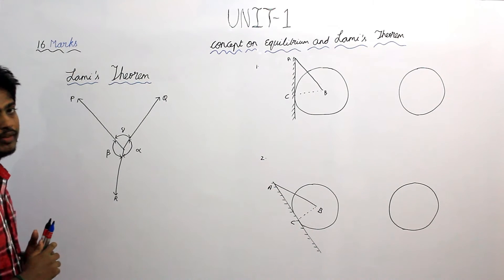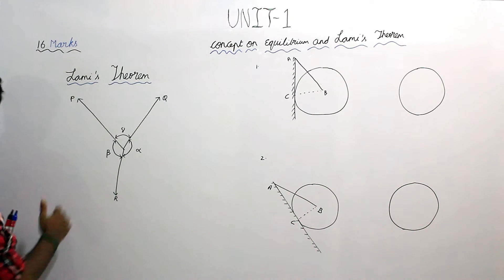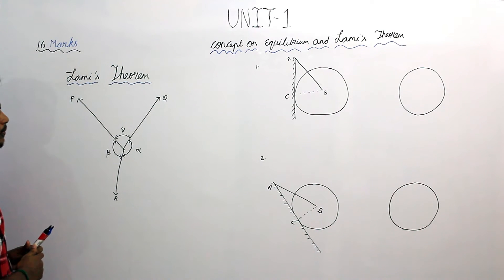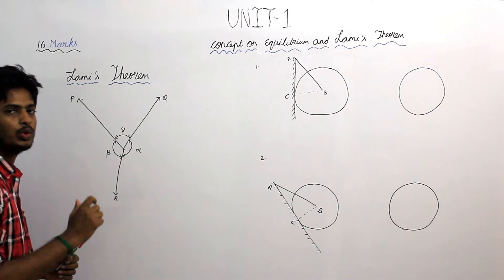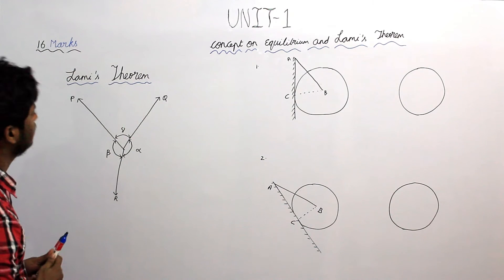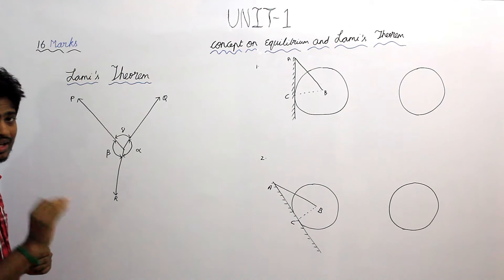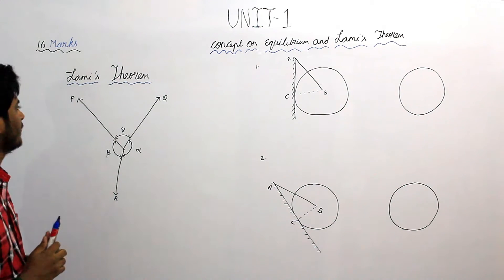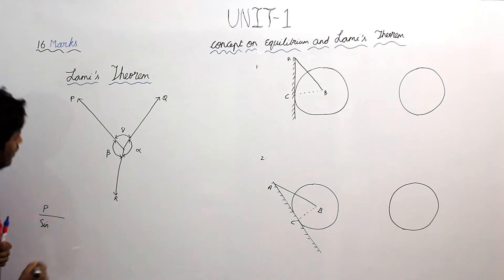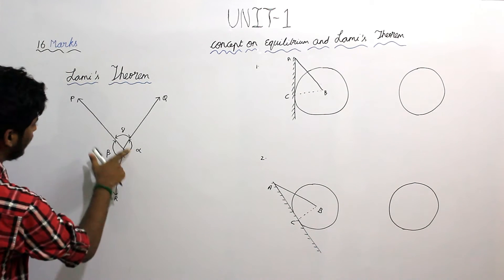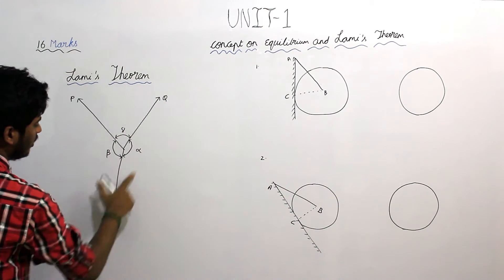Coplanar refers to forces which are acting in a same plane or a single plane. If 3 forces are acting in a single plane and are to be in equilibrium — equilibrium refers to balanced force — then each force is proportional to the sine of the angle between the other 2 forces. P is directly proportional to the sine of the angle between the other 2 forces.